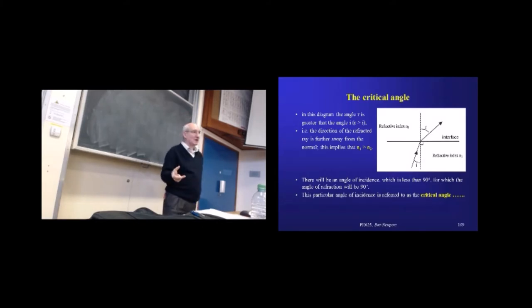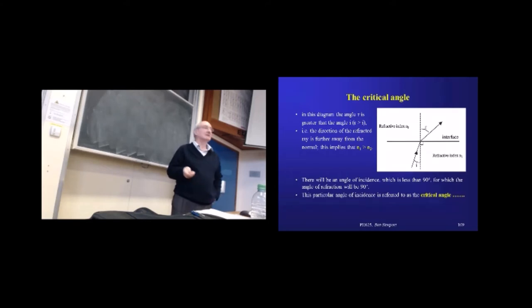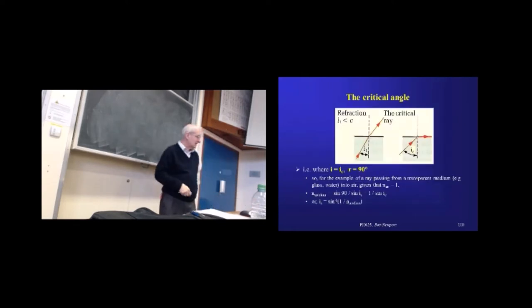And that's the point at which sine of R is equal to 1. We're not going to go any further with Snell's Law than that. But the key thing is that whatever the angle of incidence is for R to reach 90 degrees, that is what we refer to hereafter as the critical angle. And it's a critical angle that becomes hugely important.